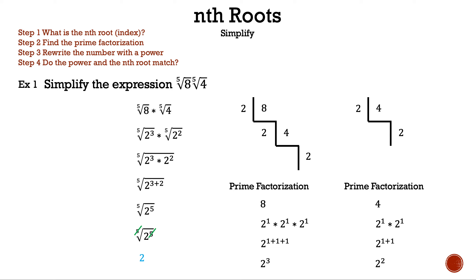Before we move on to example two, let's see what happens if we multiply the numbers eight and four at the start. We would have to find the fifth root of 32, and we still get the same result with more or less the same steps. So you can choose what method you prefer.